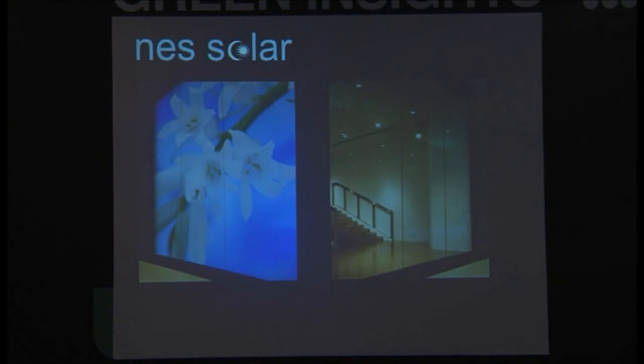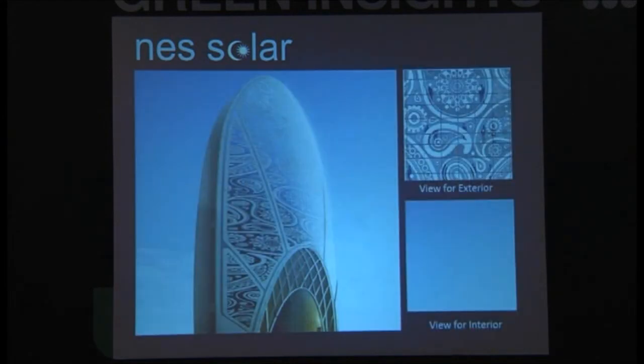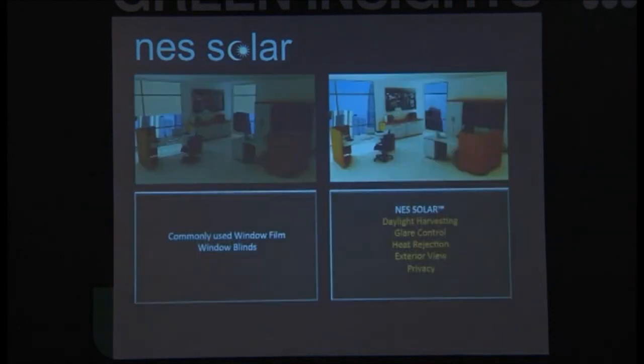There's lots of things we can actually do with NES Solar. We can actually put graphics on the outside that are viewed from the outside, but not viewed from the inside. So the picture here you see is the same window. So we can actually decorate a building externally, but we can still have a clear view from the inside. This is taking it to another level. This is a concept that was done for a building in Mumbai, where we were going to put henna all over the building, but the problem was that you would see it from inside the building. With NES Solar, we can actually give you a clear view of the sky.